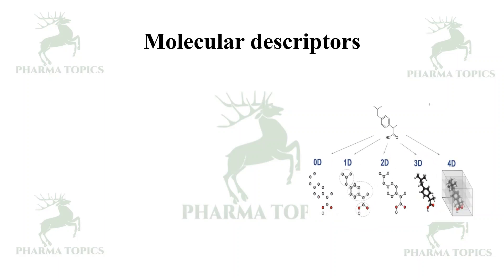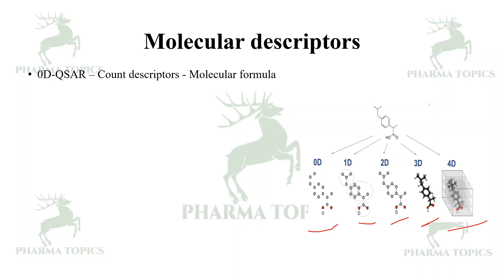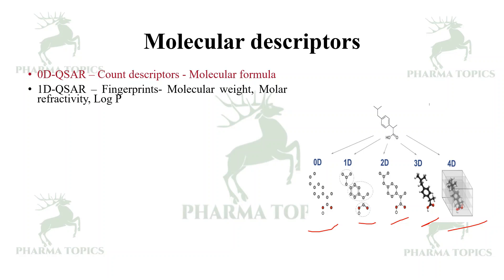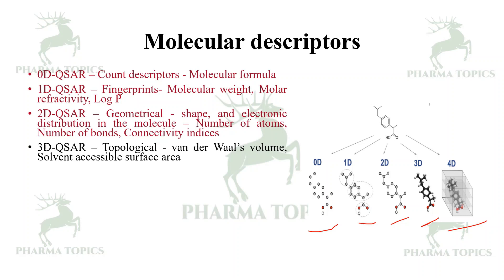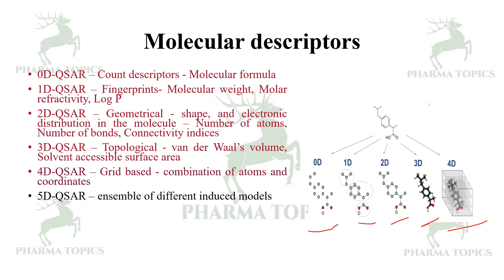The dimensional descriptors span from 0D to 4D: 0D QSAR represents the molecular formula; 1D represents fingerprints like molecular weight, molecular refractivity, and log P; 2D gives geometrical descriptors like shape, electronic distribution, number of atoms, bonds, and connectivity indices; 3D gives topological descriptors like van der Waals volume and solvent-accessible surface area; 4D is grid-based, combining atoms and coordinates; 5D is an ensemble of different induced models; and 6D is related to entropy dimensions.